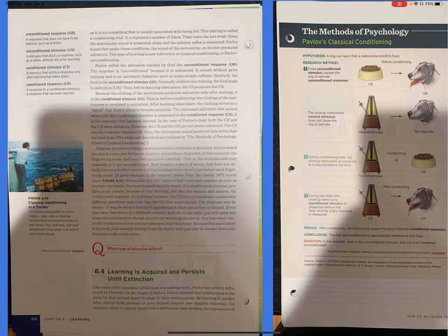Pavlov called the salivation elicited by food the unconditioned response (UR). The response is unconditioned because it is unlearned. It occurs without prior training and it is an automatic behavior, such as some simple reflexes. Similarly, the food is the unconditioned stimulus (US). Normally, without any training, the food leads to salivation. Thus, before learning takes place, the unconditioned stimulus produces the unconditioned response.